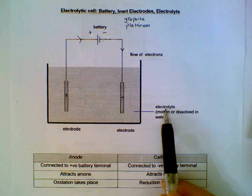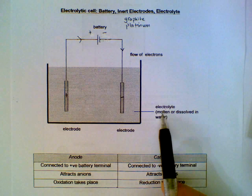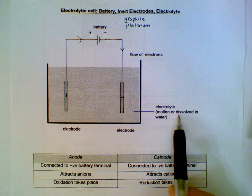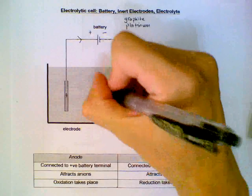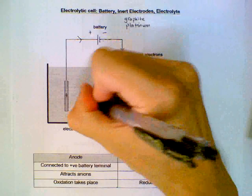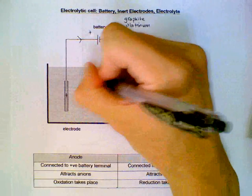In the electrolyte, we have ionic compounds that are either molten or dissolved in water, aqueous. In this state, the positive ions and the negative ions are mobile. They are free moving.